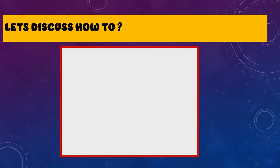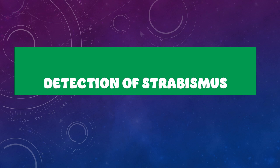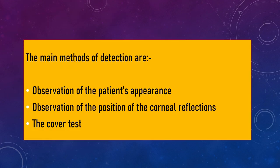In this series we will discuss: first, how to detect whether squint is present; second, how to estimate the angle of squint; and third, how to objectively measure that squint. For detection, during inspection you observe the patient's appearance — certain appearances will tell you that the patient might have squint. Second, you observe the position of the corneal reflexes — the Hirschberg's corneal reflex — and third is the cover test, which will be covered in a separate video.